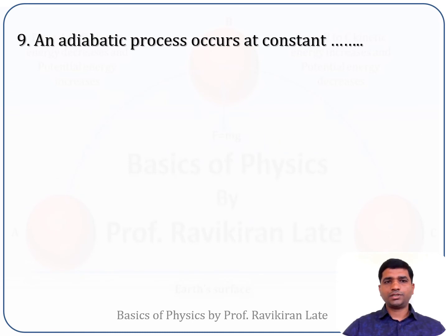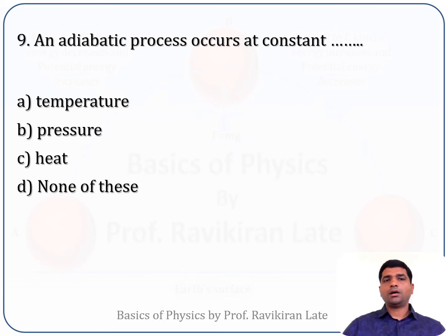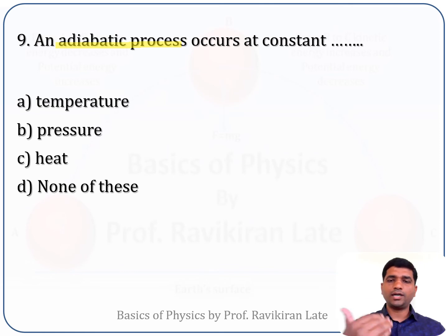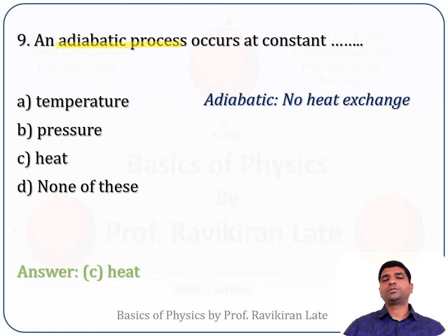The ninth question: an adiabatic process occurs at — option A: constant temperature, option B: constant pressure, option C: constant heat, option D: none of these. In an adiabatic process, the system neither gives heat to the surroundings nor takes heat from the surroundings, so the net heat content of the system remains constant. The correct answer is option C: constant heat.